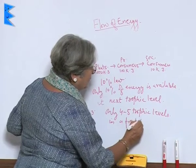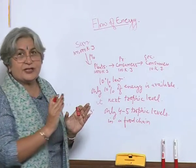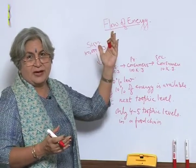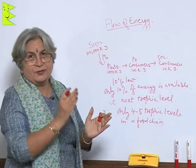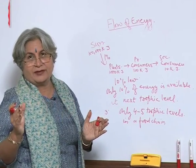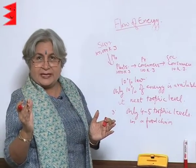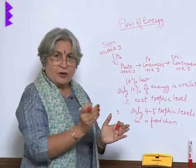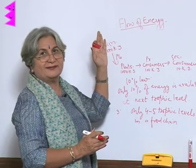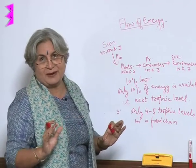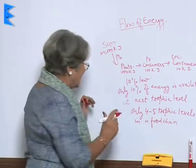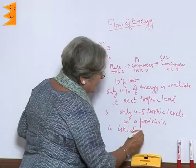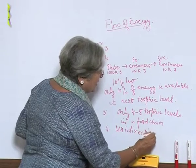The question arises: what is the direction of flow of energy? The direction is from sun to plants to primary consumers to secondary consumers. But can it revert — can it go from secondary consumer back to primary consumers, then to plants, and back to the sun? No, it cannot happen like that. So we can say that the flow of energy is unidirectional.